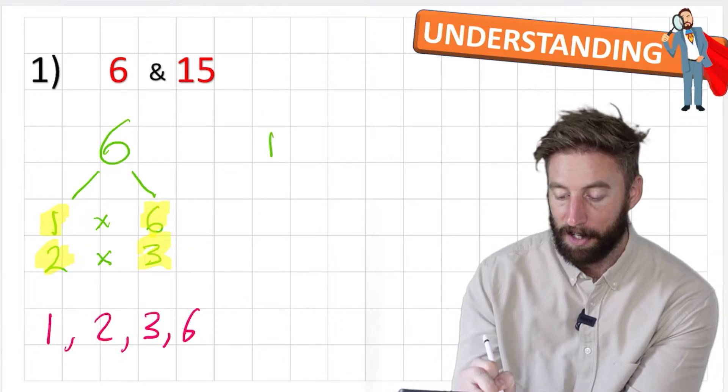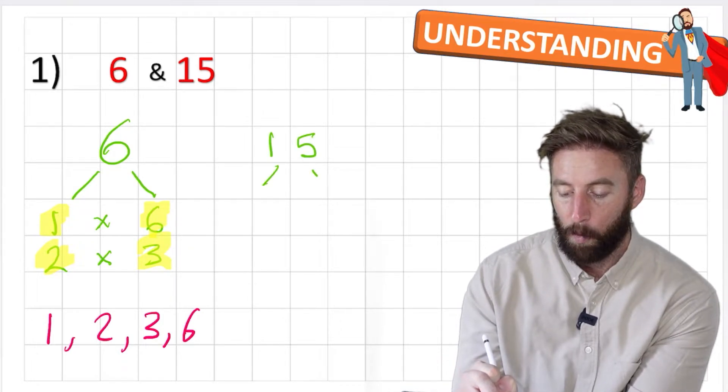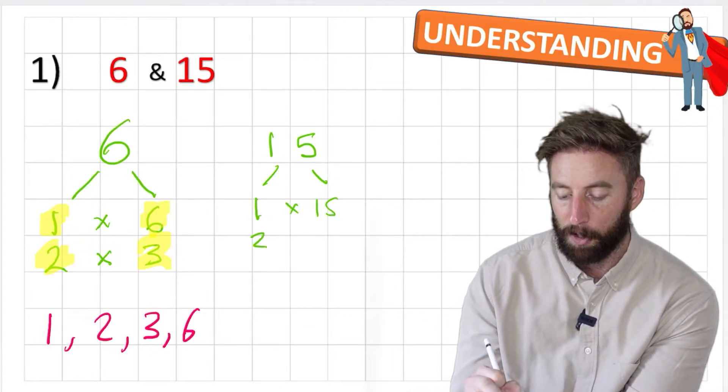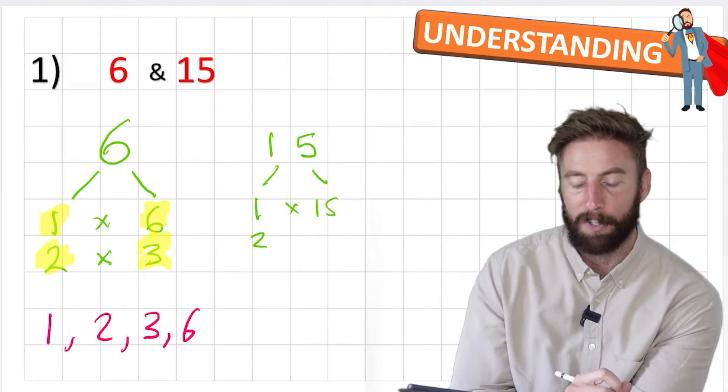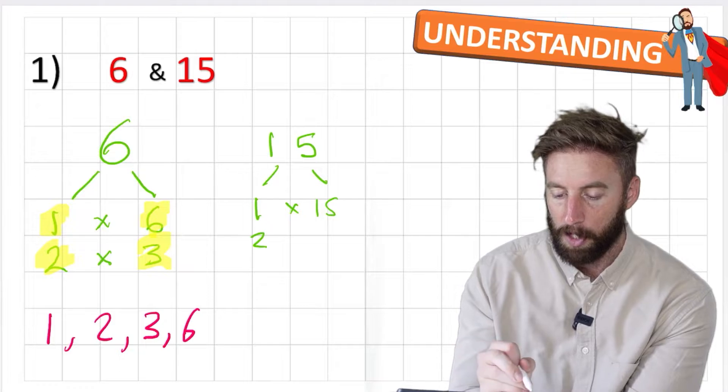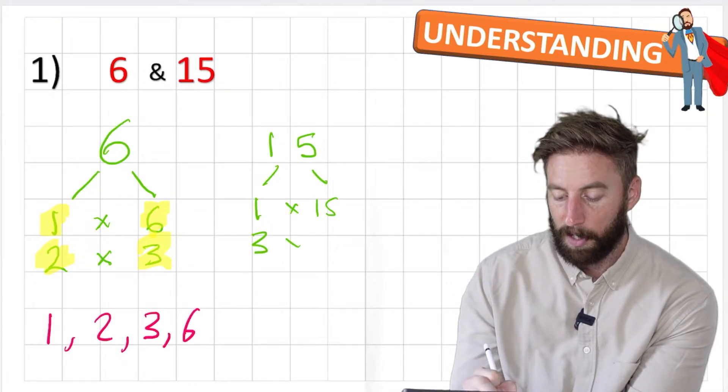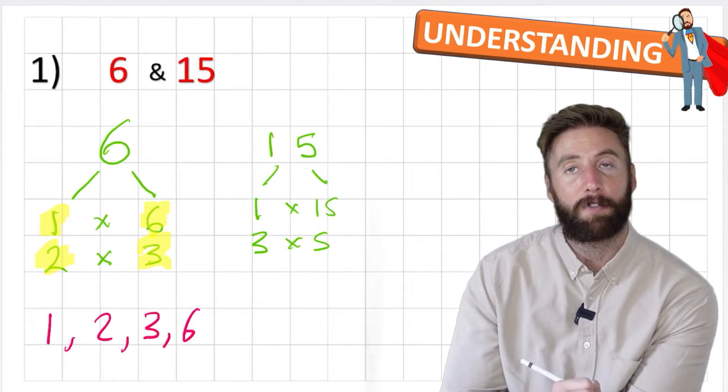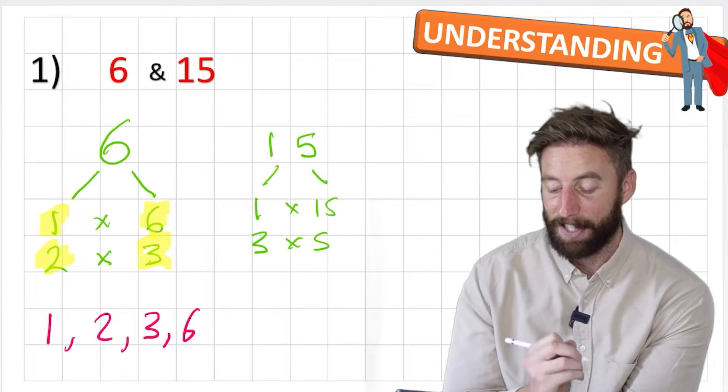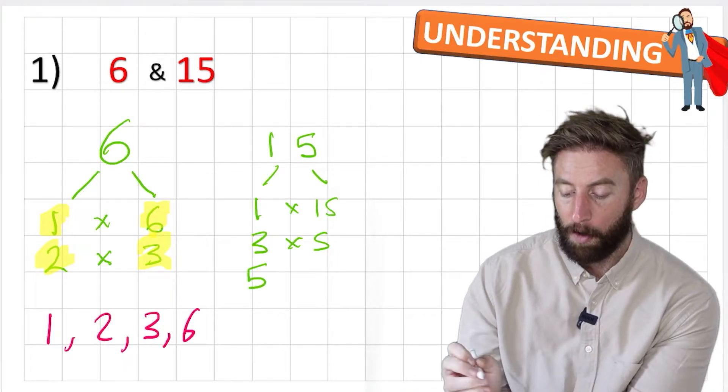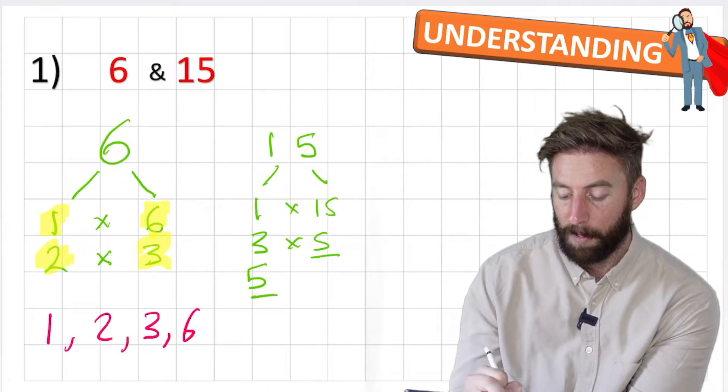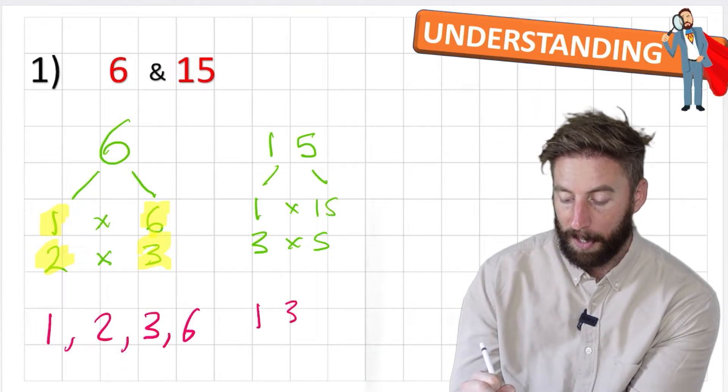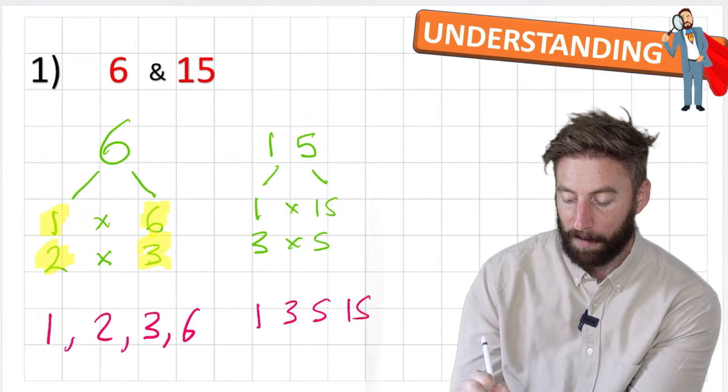So now we need to look at fifteen. So if I put fifteen over here, what are my factors of fifteen? Well I know I have one. One times fifteen will equal fifteen. Have I got a two? No because fifteen is not divisible by two. I can't divide fifteen by two. So I have no two. What about three? Three times five equals fifteen. What about four? Is fifteen divisible by four? Four, eight, twelve, sixteen. So no. And then if we try and use five, I've already used a five so I don't need to do that. So let's have a look. Our factors of fifteen are one, three, five and fifteen.